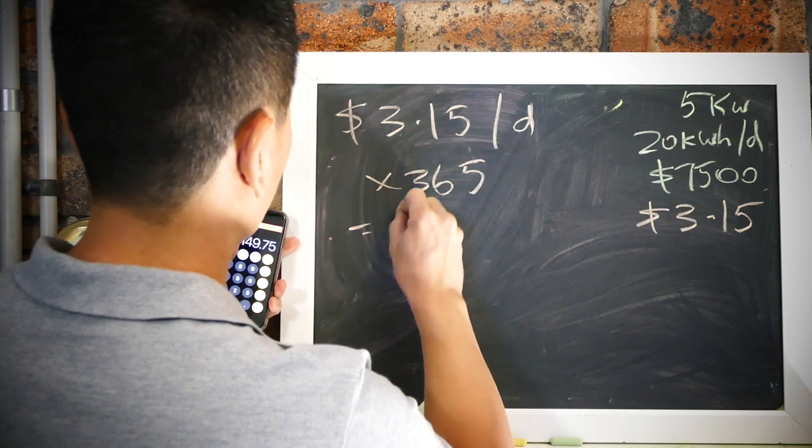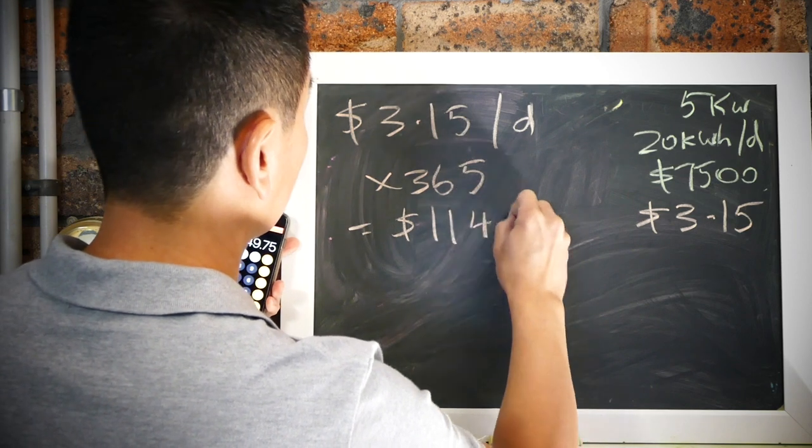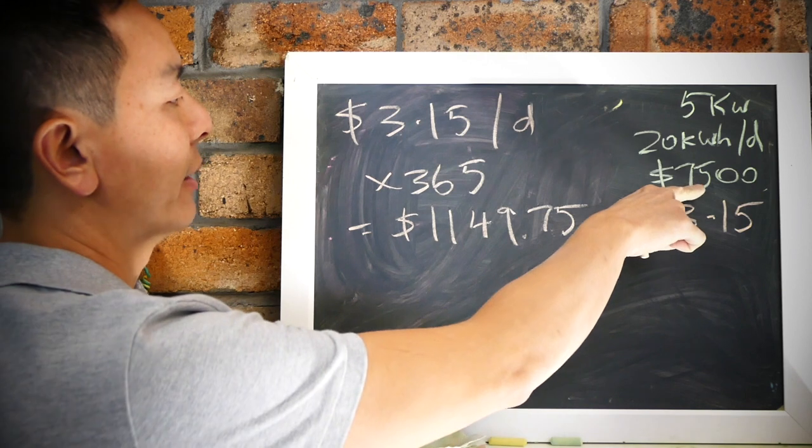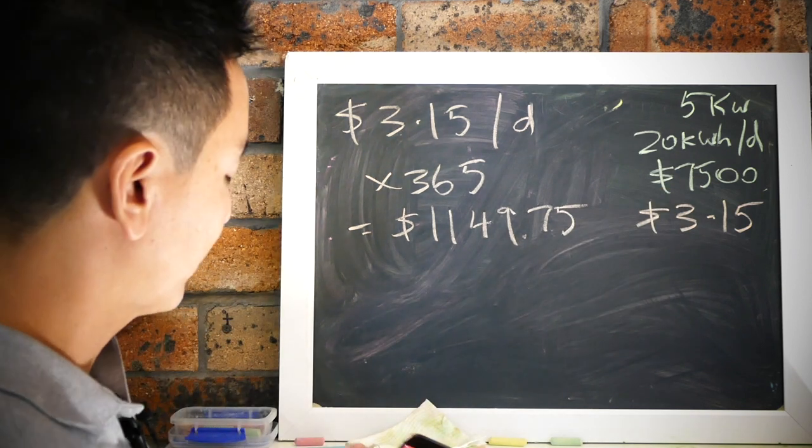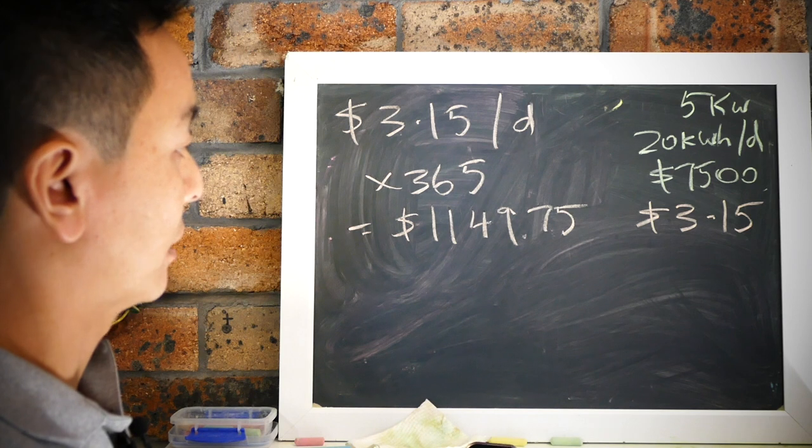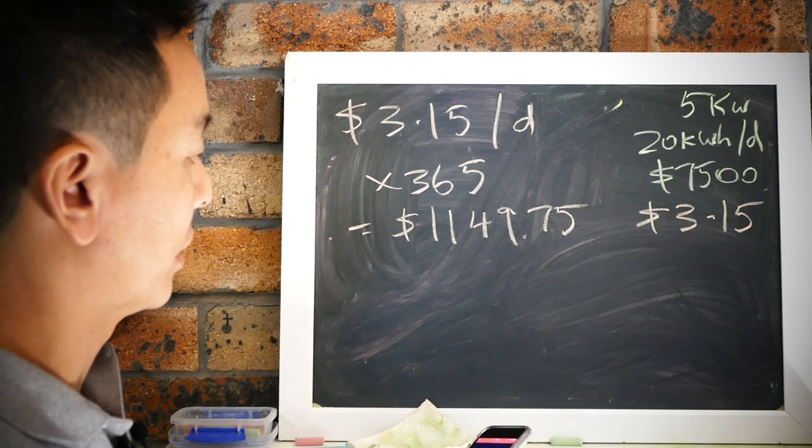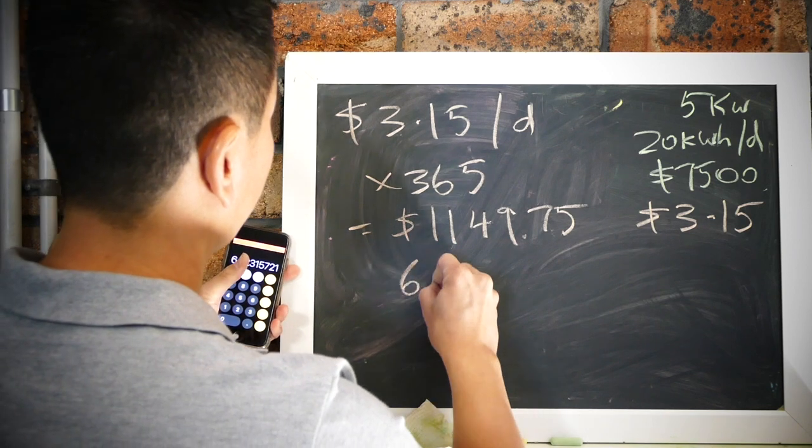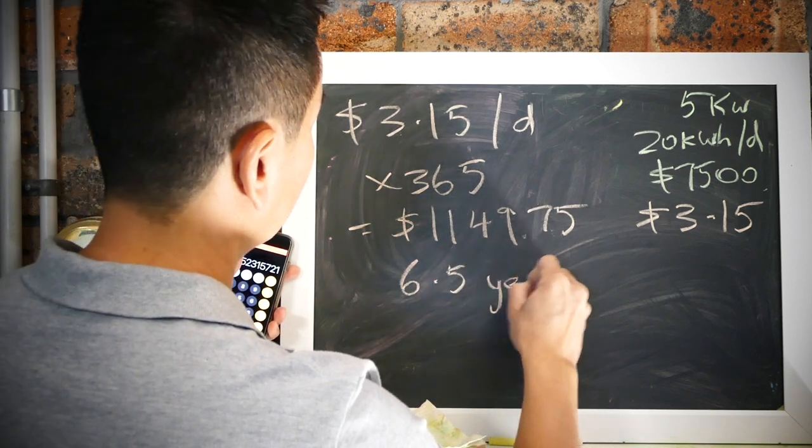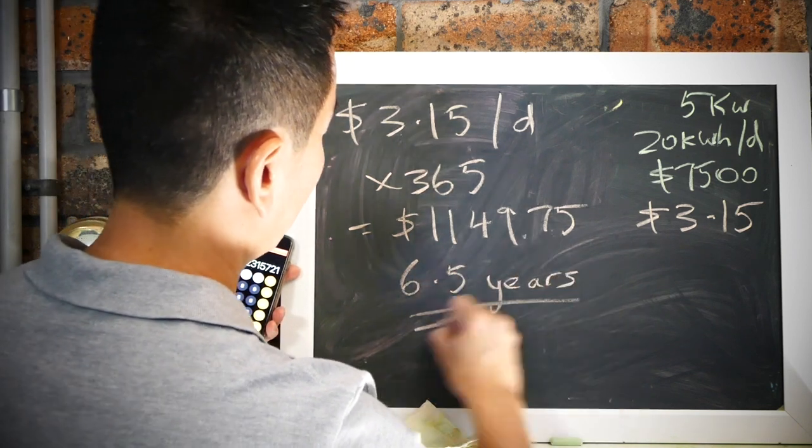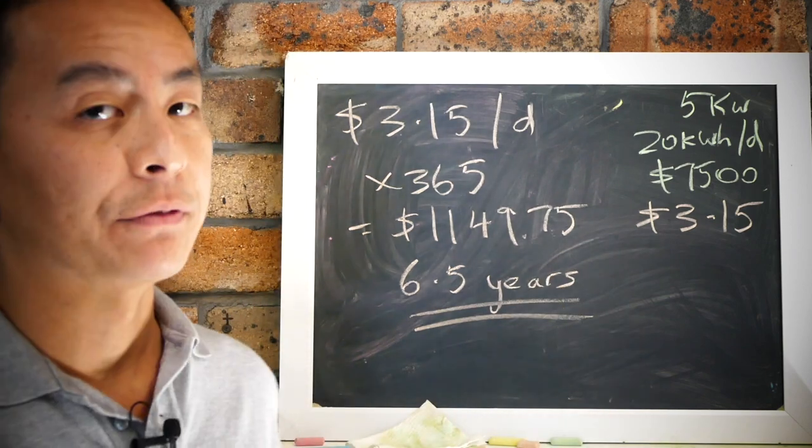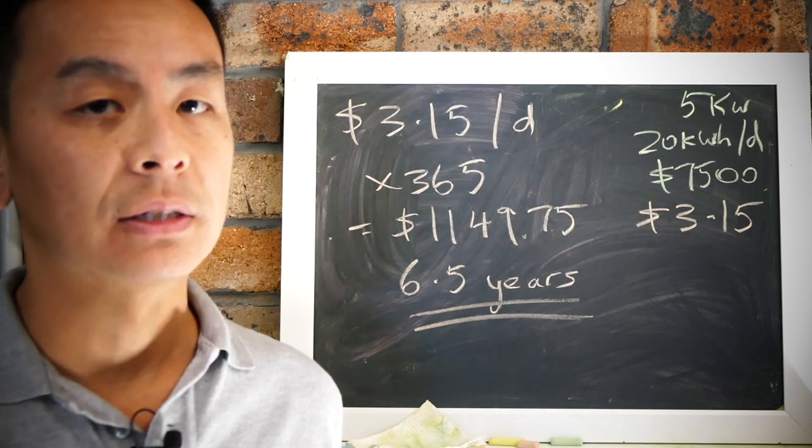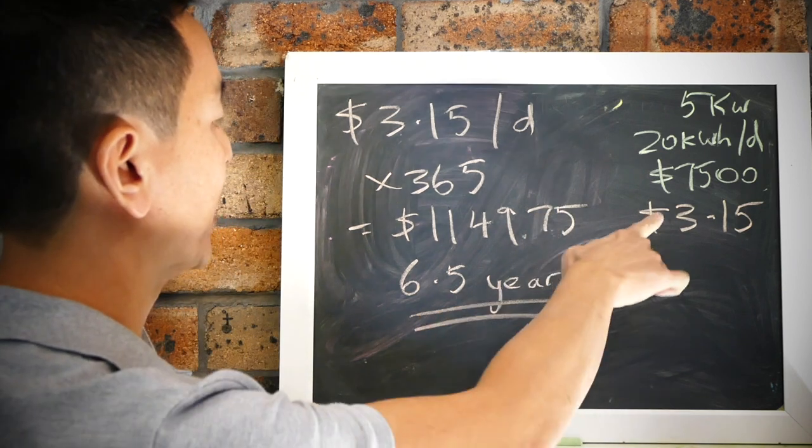Our initial outlay was seven thousand five hundred dollars, so let's do that: seven thousand five hundred divided by one thousand one hundred forty nine dollars and seventy-five cents is six point five years. That is how long it's going to take for you to recoup your cost, recoup your initial investment of seven thousand five hundred dollars to pay back your solar panels: six and a half years.